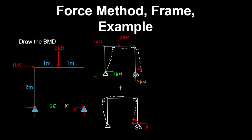Now to draw the real bending moment diagram, we cut the column. The bending moment is one kilonewton by the perpendicular moment arm, which is two kilonewton meters. The magnitude of the bending moment in the beam is equal to that in the column at the joint. By Newton's third law, you have two kilonewtons acting on the beam — two multiplied by the moment arm of one meter gives two kilonewton meters at midspan. So the real bending moment diagram looks something like this.